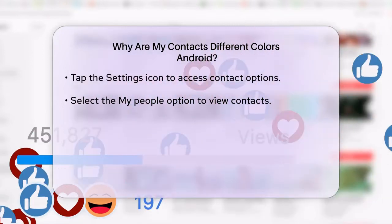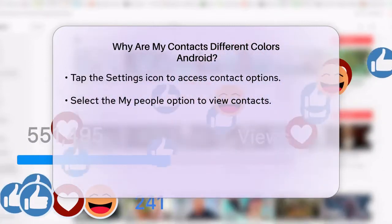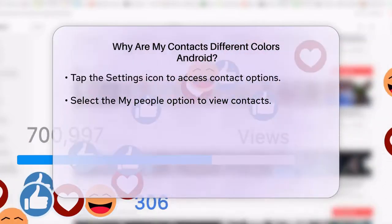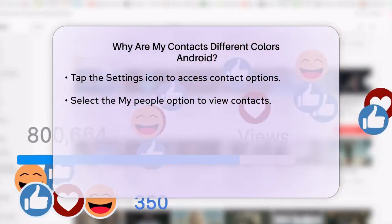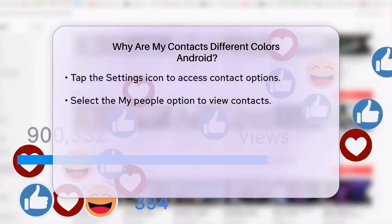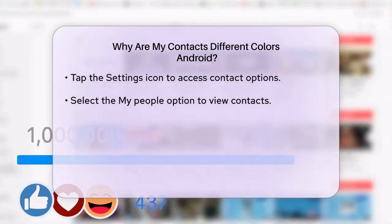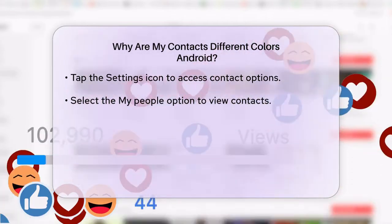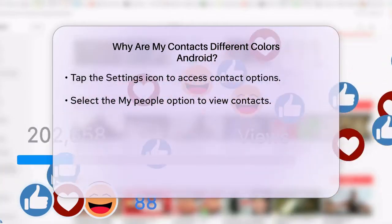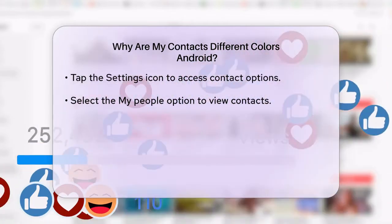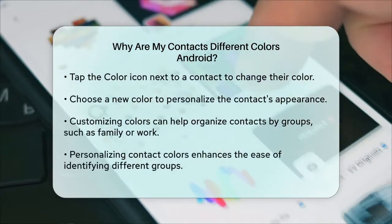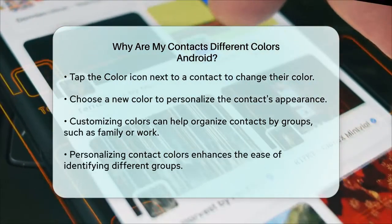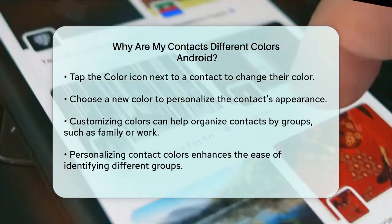Open the My People list by dragging the tab from the Edge screen towards the center of the screen. Tap on the Settings icon. Select the My People option. Tap on the Contacts color icon to change the color. Choose the color you want to set for that contact. This way, you can customize the colors to better organize your contacts, such as using different colors for work, friends, family, or other groups.